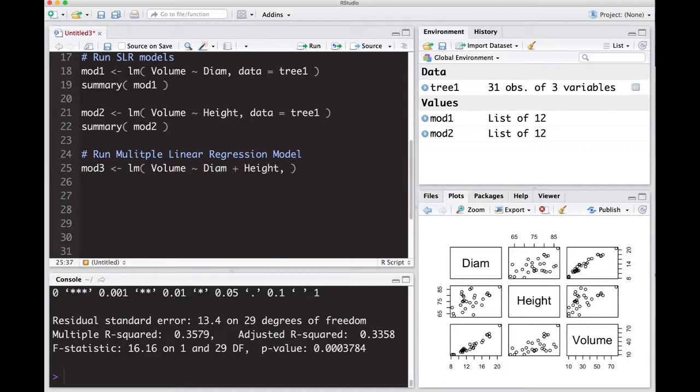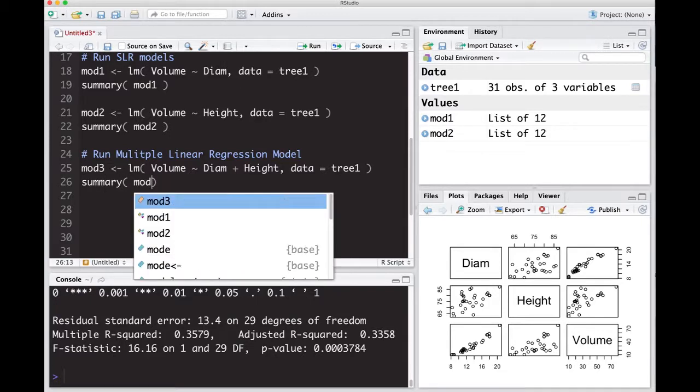The plus sign goes between each variable as long as it's on the right side of the tilde. Our data is tree1, and then I'm going to do a summary on mod3.